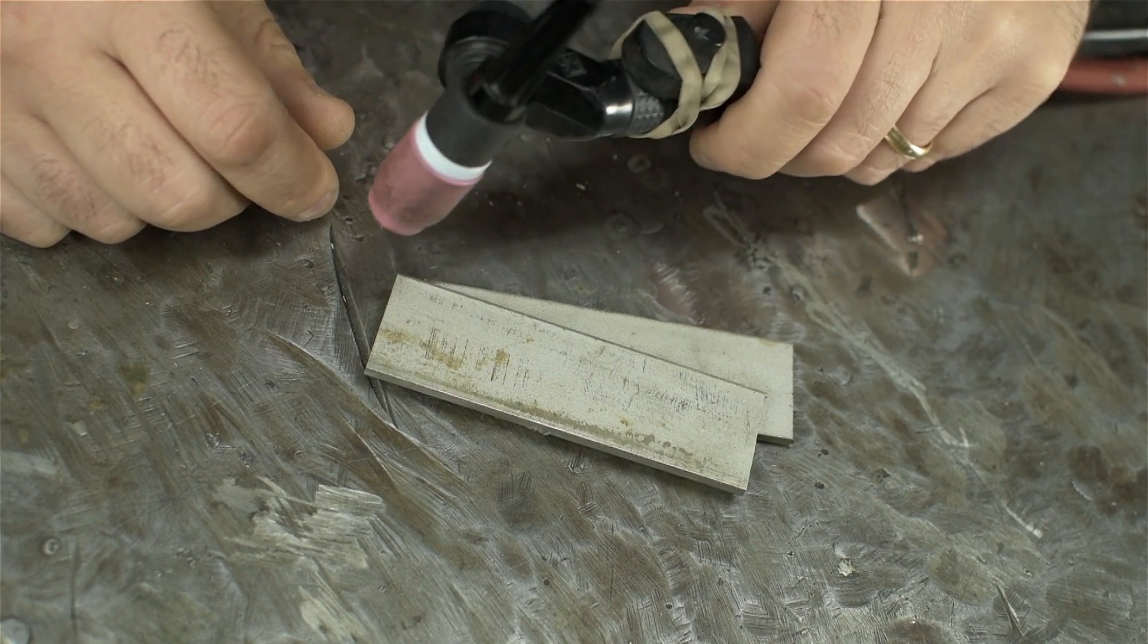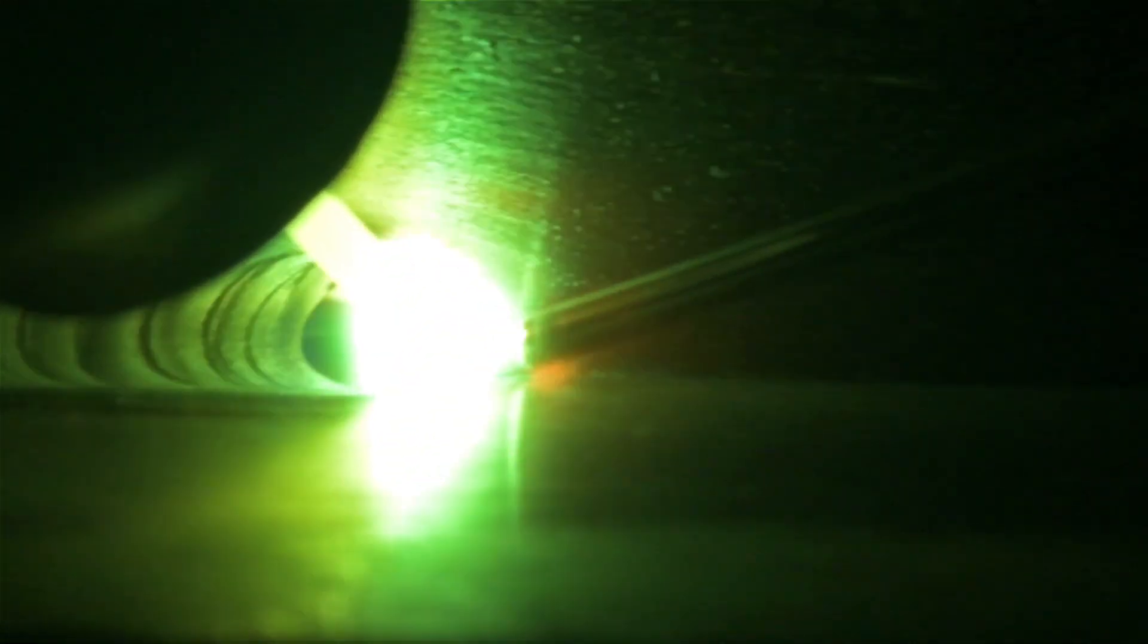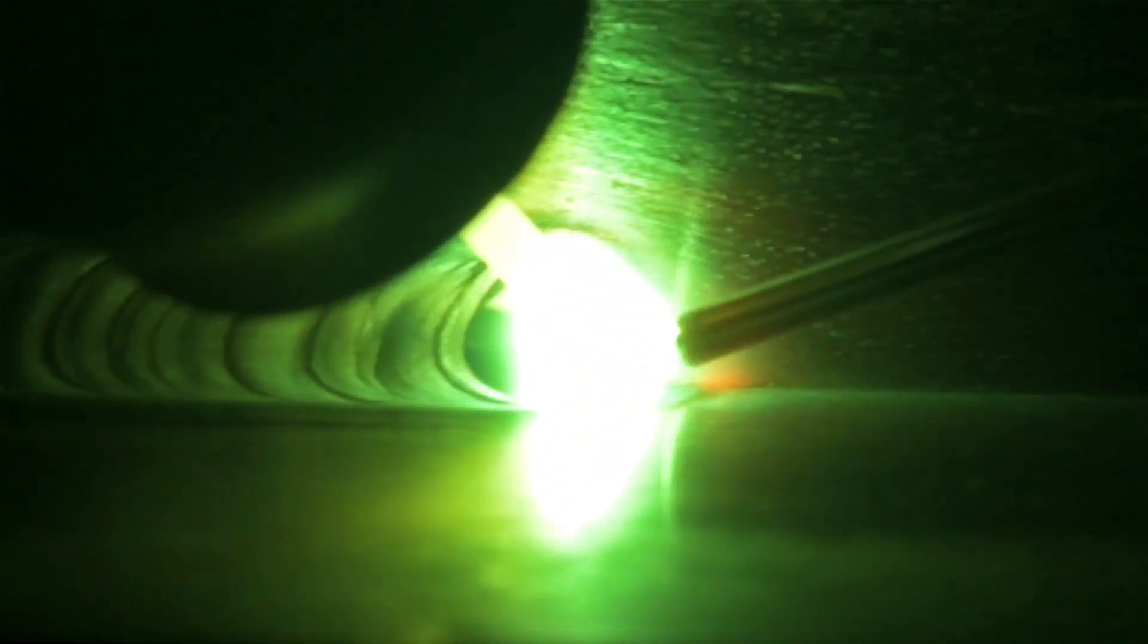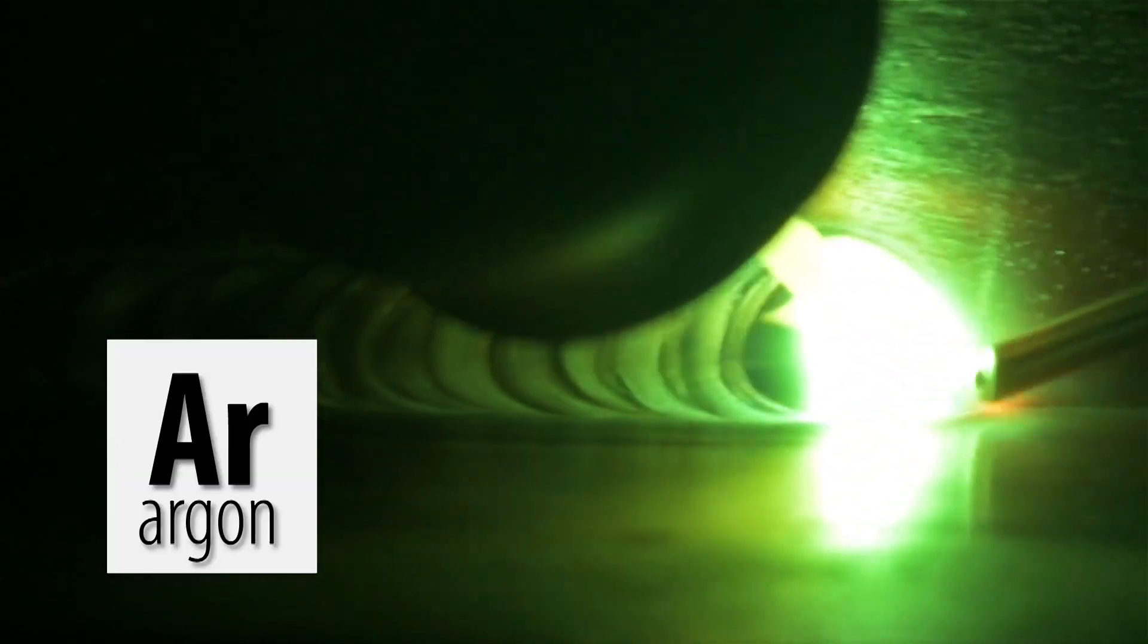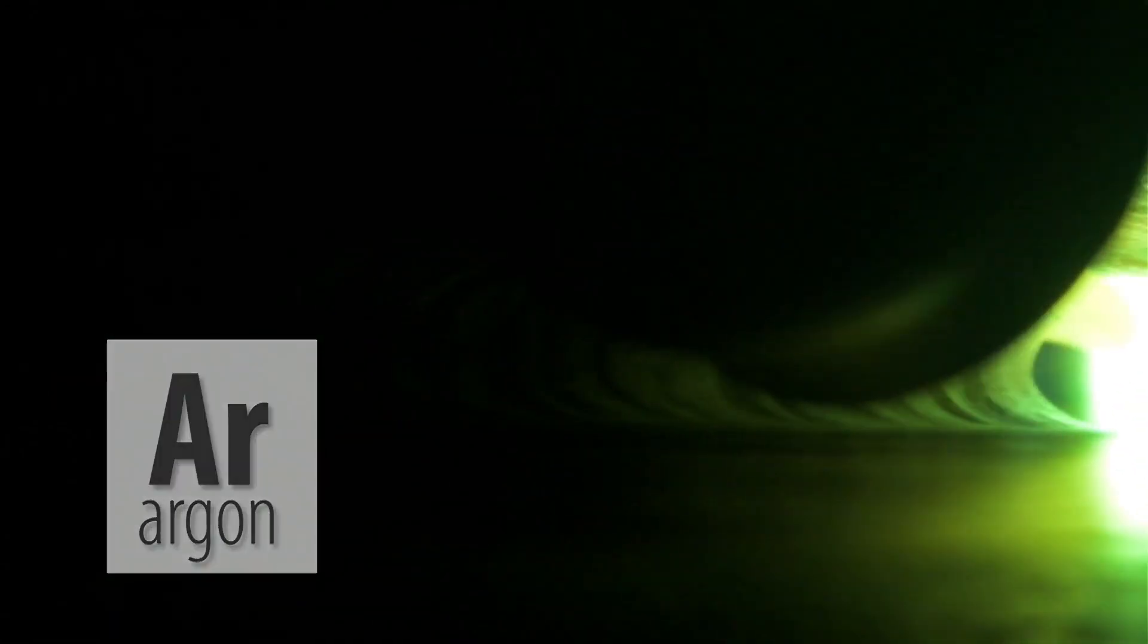Before we get into that, let's take a step back because you're way too up in my personal space. TIG welding uses an inert gas to generate and maintain an arc and shield the molten metal from the atmosphere. Usually that gas is argon. I can't show that to you because the argon I like to use is invisible.